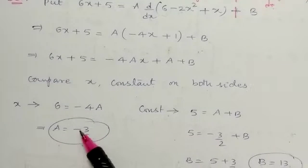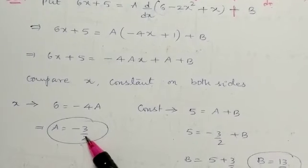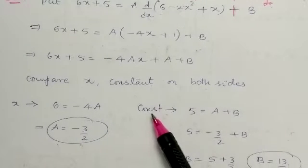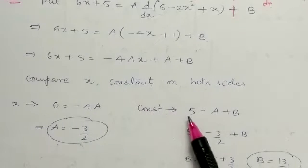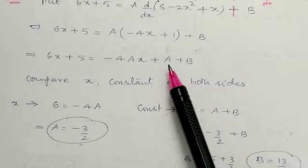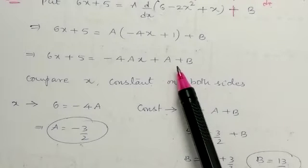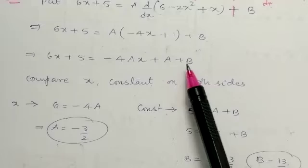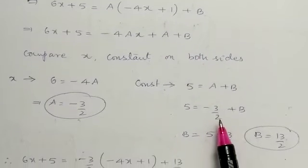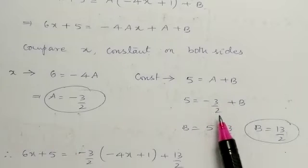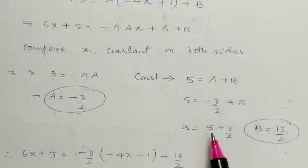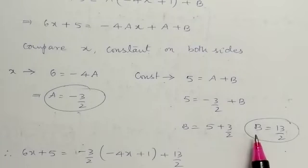By comparing x coefficients: 6 = -4A. By simplification, A = -3/2. Now compare constant on both sides. The constant on the left is 5. On the right-hand side, the constant is A + B. Replace the value of A, which is -3/2.